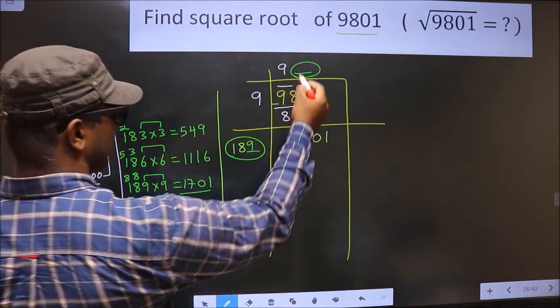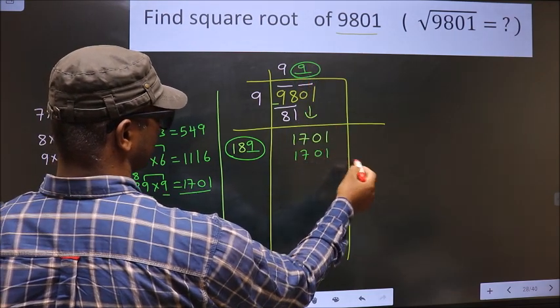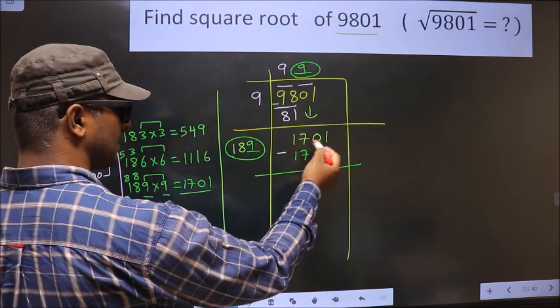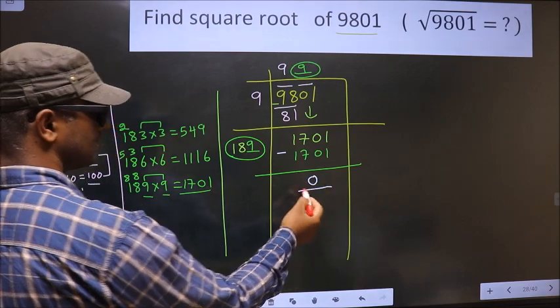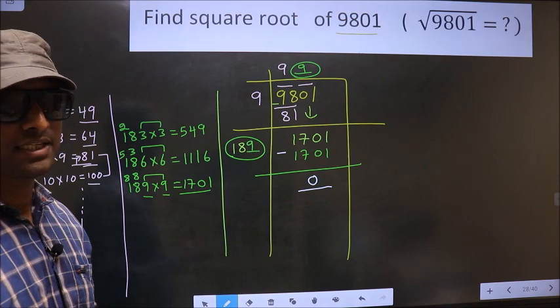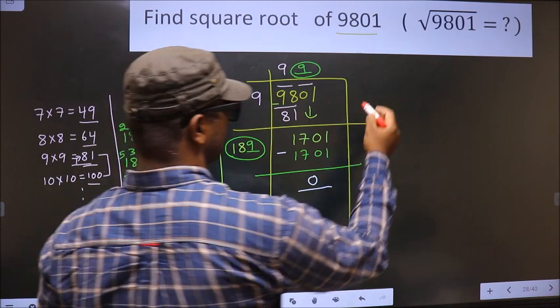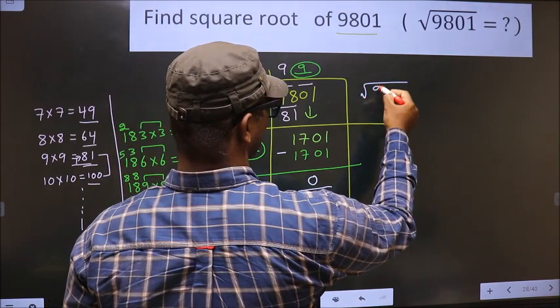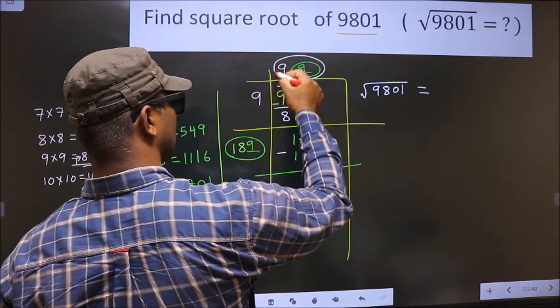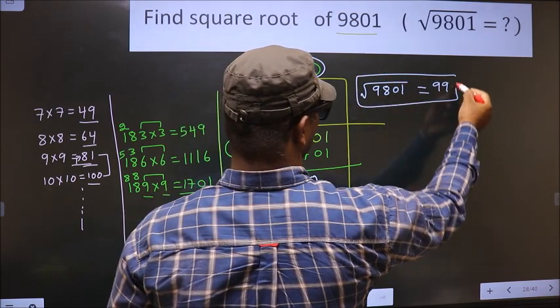So here we take 9 and here also 9, and here 1701. Now we subtract 1701 minus 1701, we get 0. We got 0 here, that means the given number is a perfect square. And the square root of 9801 is this number, that is 99. So this is our answer.